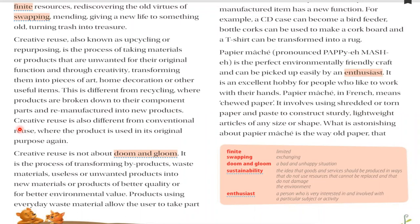Creative reuse is also different from conventional reuse, which means general reuse — using something for a common purpose. Conventional reuse is where the product is used in its original purpose again. For example, if an old cycle is not working and you put some parts in it and make it a working cycle again, that is conventional reuse — using the old thing for the same purpose.